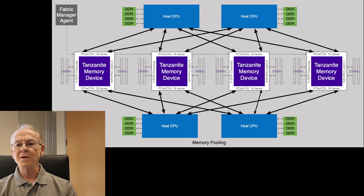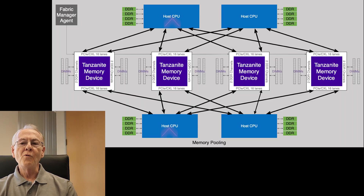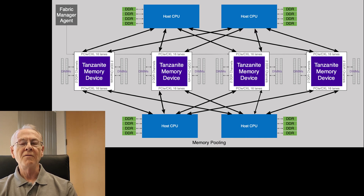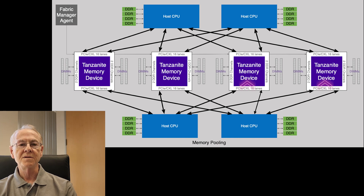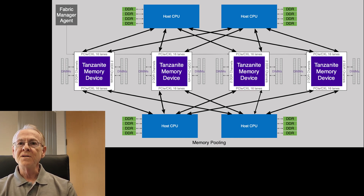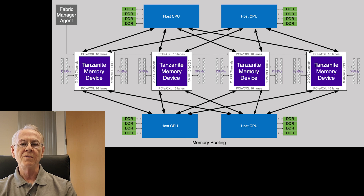In the pooling example on the right, we have four CXL 1.1 hosts and four CXL 2.0 Tanzanite memory devices. Tanzanite's memory device is 2.0 compliant, but we have a unique feature that enables us to support CXL 1.1 hosts with pooling.